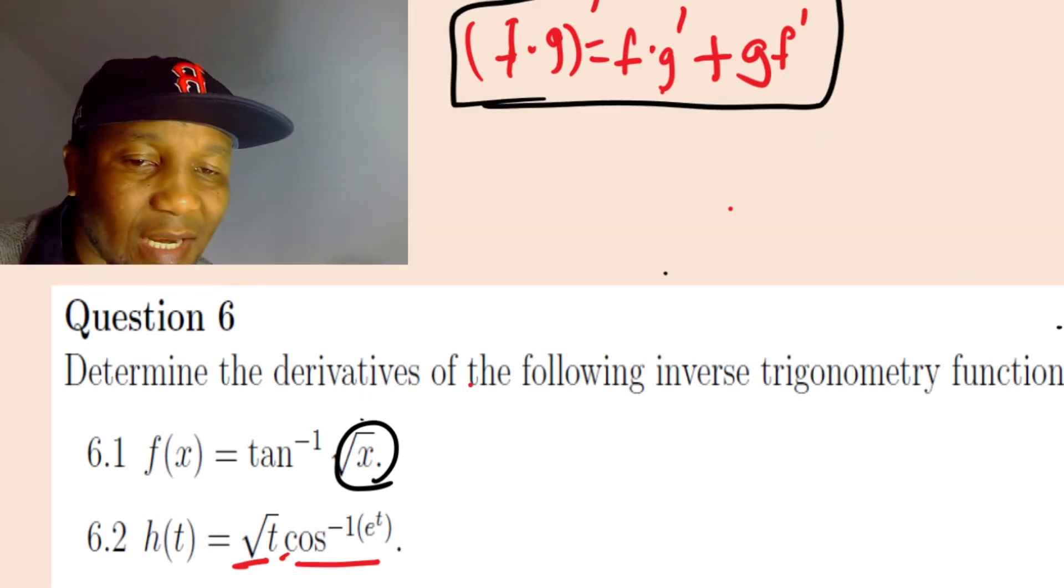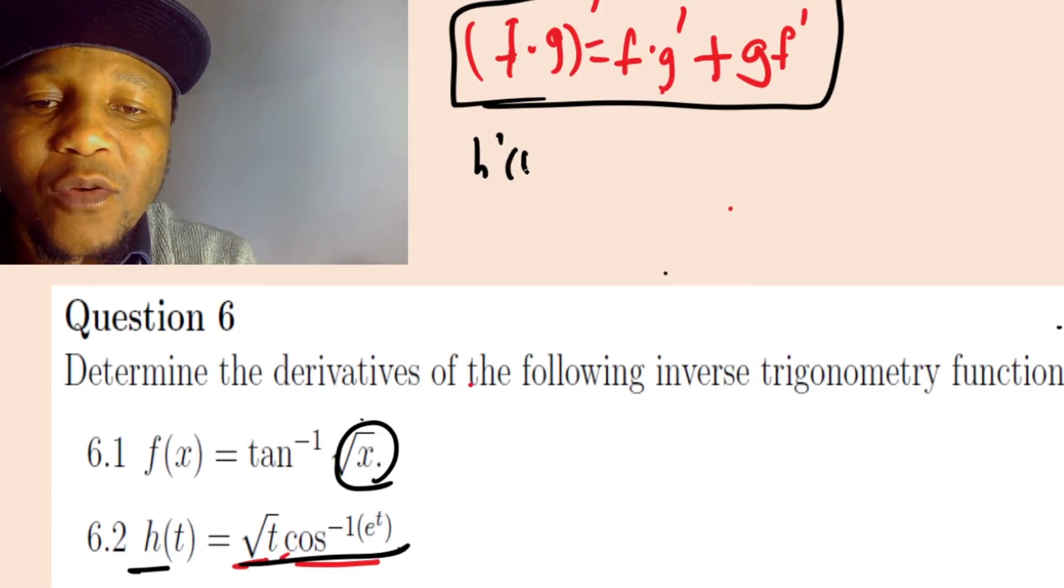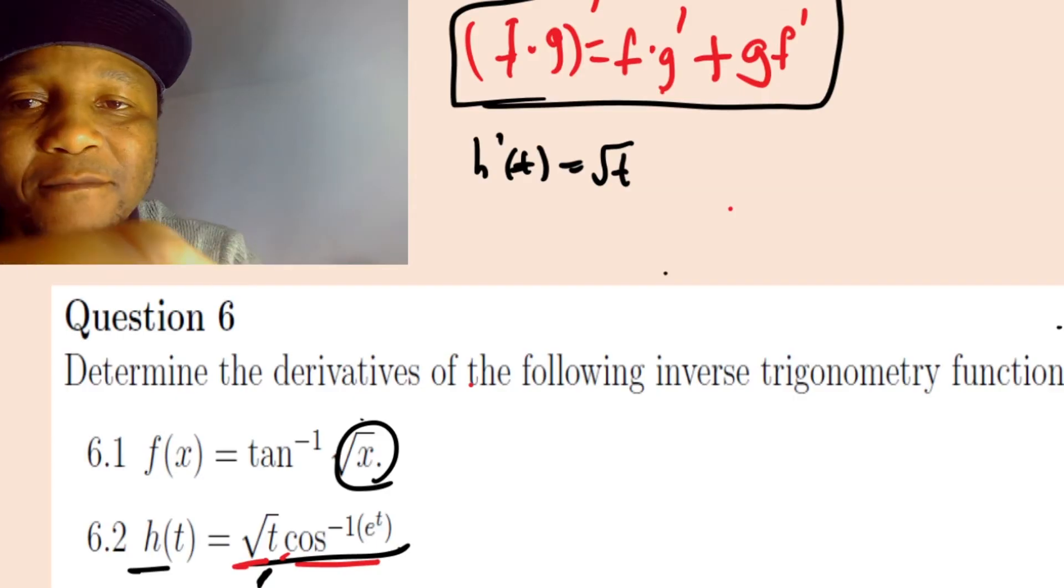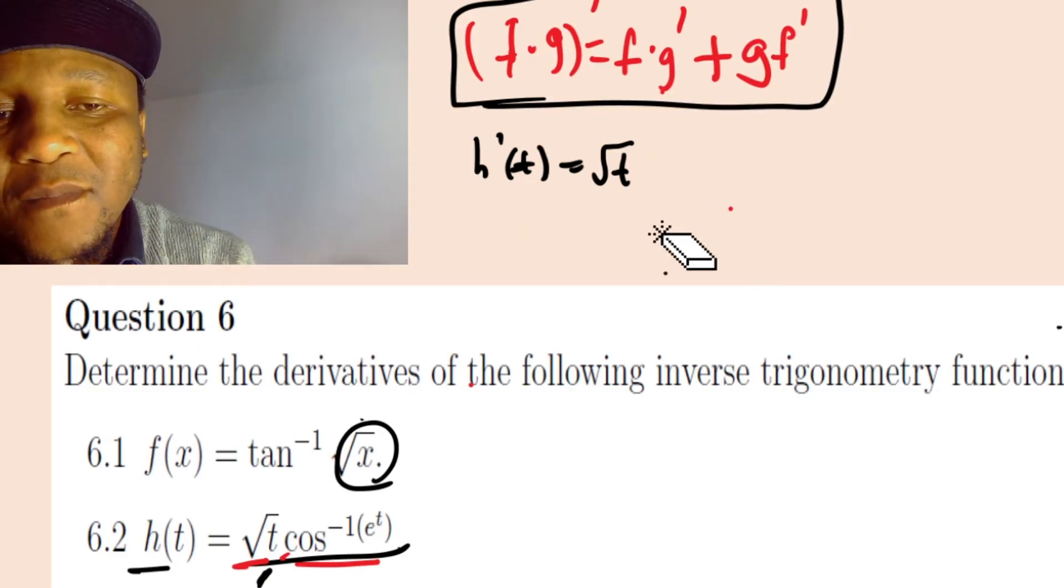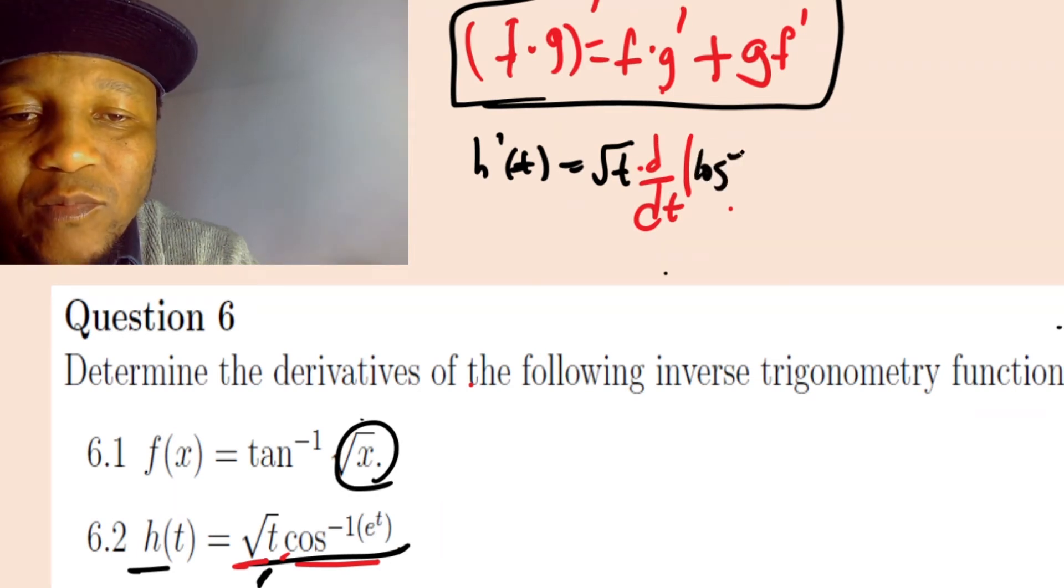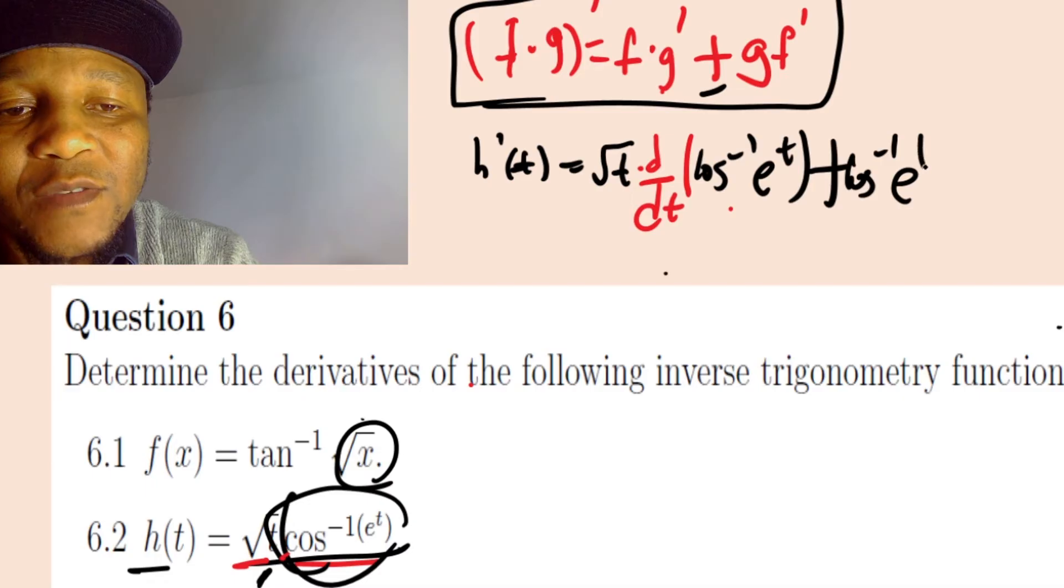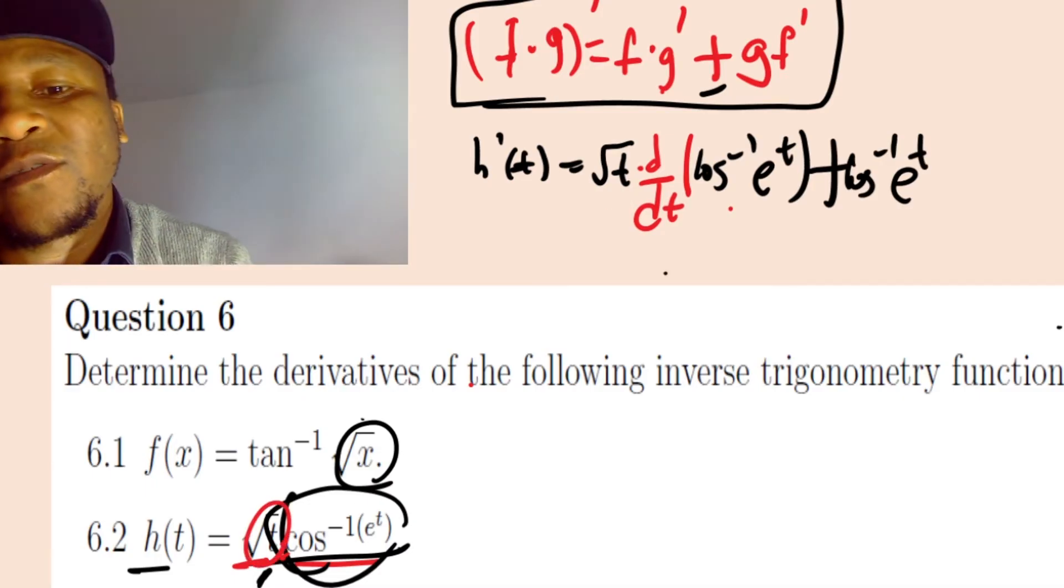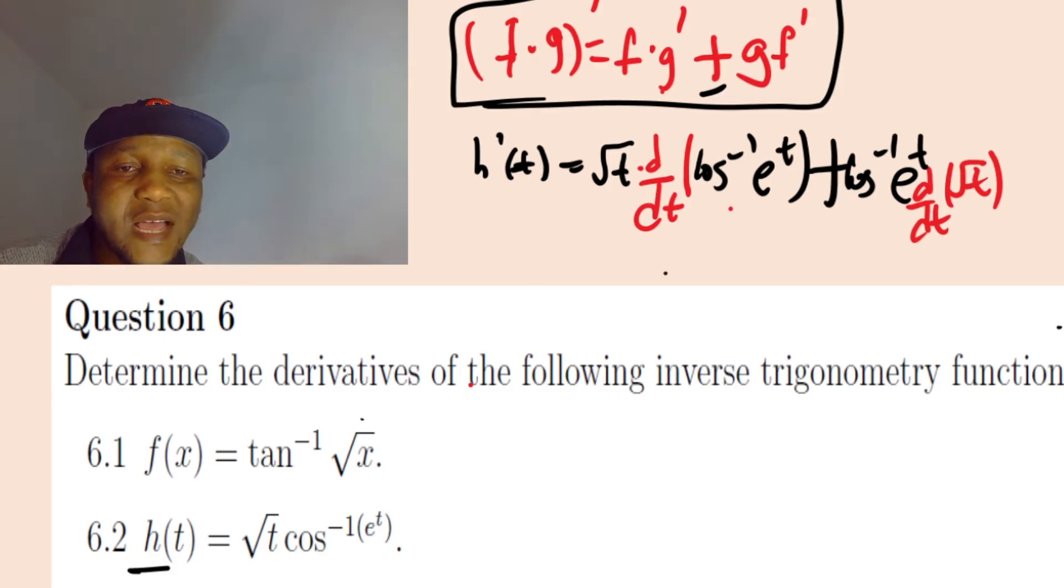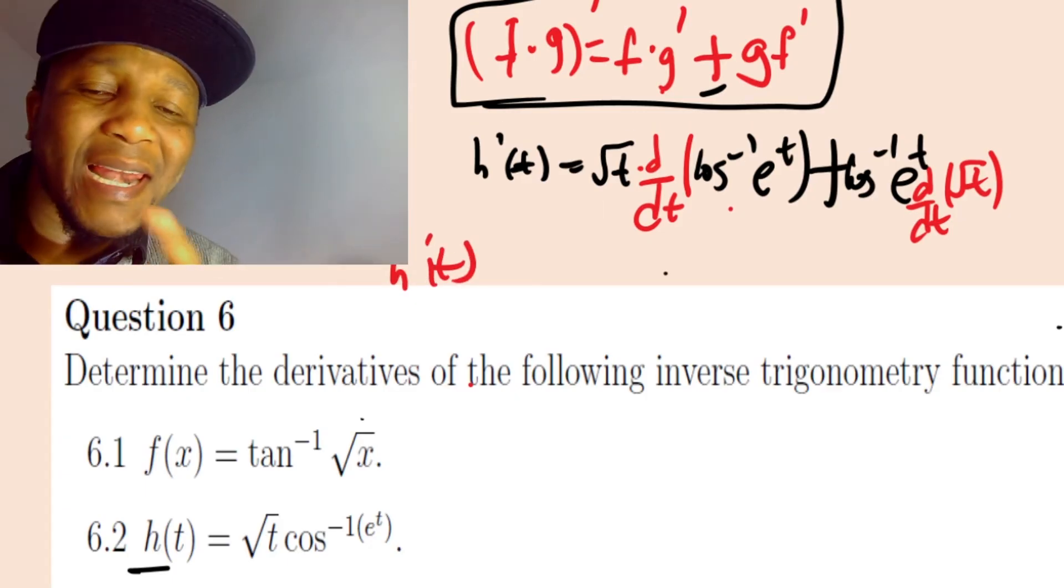Now let's do the problem. I'm going to say h prime of t, but now we deal with t, not x anymore. I'm going to write this as constant and derivate the second one, which is cos inverse of t. Then we're going to plus - now this becomes constant, cos inverse of e of t, and we differentiate the square root of t.